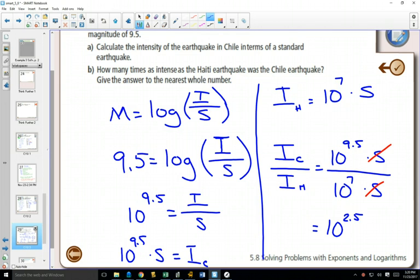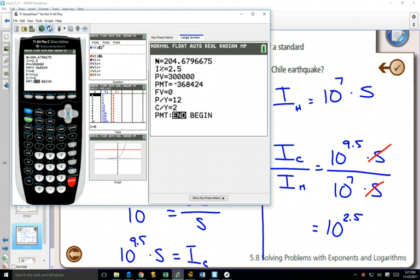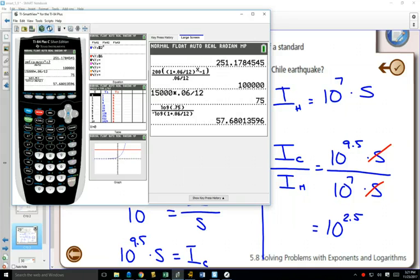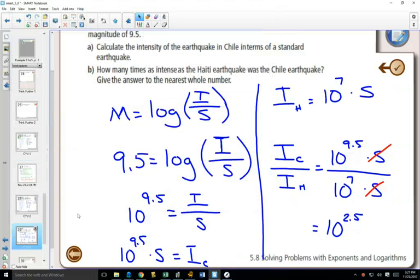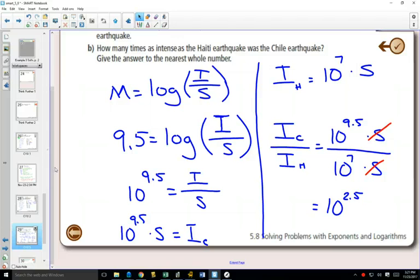This is where the shortcut comes into play. If you're comparing two earthquakes, all you need to know is how much the magnitude has gone up by. We go from 7 to 9.5, so you're going up by 2.5. That means this is going to be 10^2.5 times bigger. If you go up by 1, it's 10 times bigger. If you go up by 2, it's 100 times bigger. So we just need to do 10^2.5 in our calculator, which equals 316.2 times more intense.